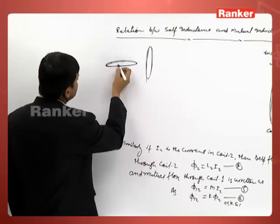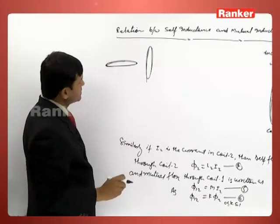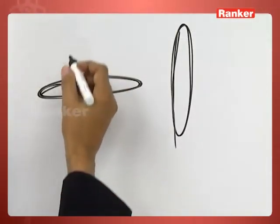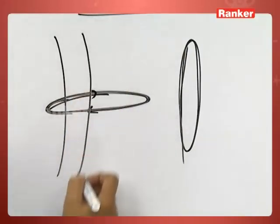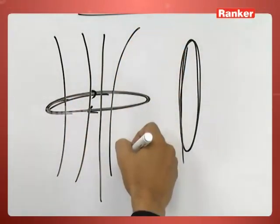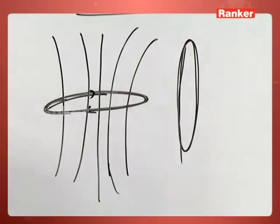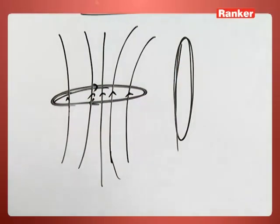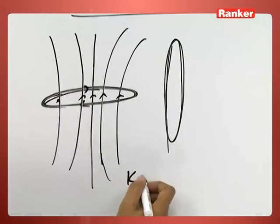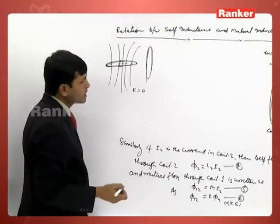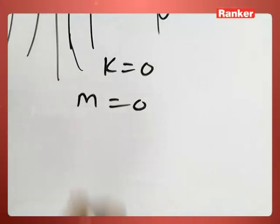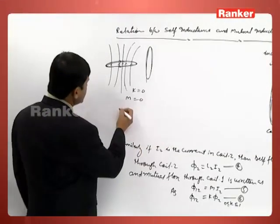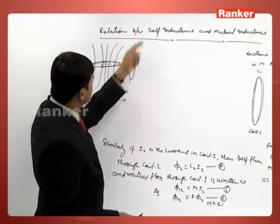For example, if one coil is oriented such that when current passes through it, the magnetic lines of forces will never pass through the second coil, then the K value is 0. There is no mutual inductance in this case — M equals 0. This is the condition where the coefficient of coupling is 0.